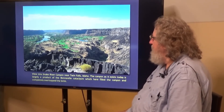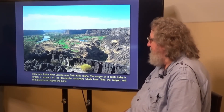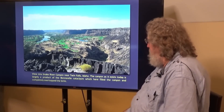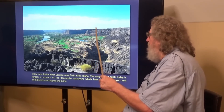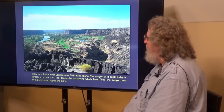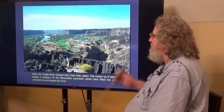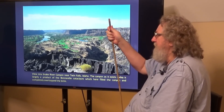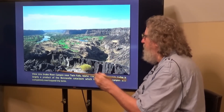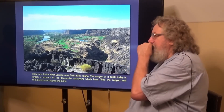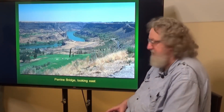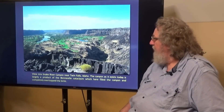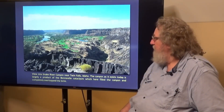This is a view into Snake River Canyon near Twin Falls. The canyon as it exists today is largely a product of the Bonneville Cataclysm, which here filled the canyon and completely overtopped the brim. In the latter stages of the flood, the water would have drained off the uplands and been confined to the channel itself. This is near the Perrine Bridge — there's a pull-off here and a beautiful steel arch bridge that goes across the canyon. They do bungee jumping and things off the bridge. This last picture was taken near the side of the Perrine Bridge, which you can see right here.